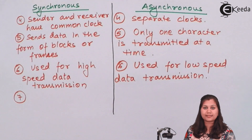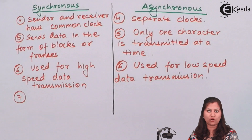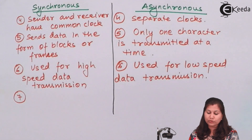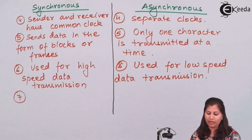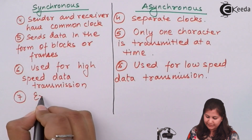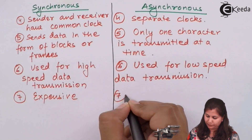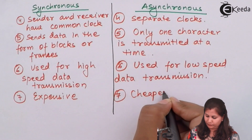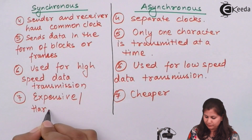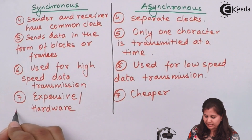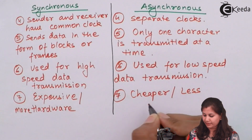The next difference is that in synchronous, because two signals are required — a clock signal and a data signal — more circuits and more hardware are required, making the synchronous method an expensive method. Whereas asynchronous is cheaper because less hardware is required.